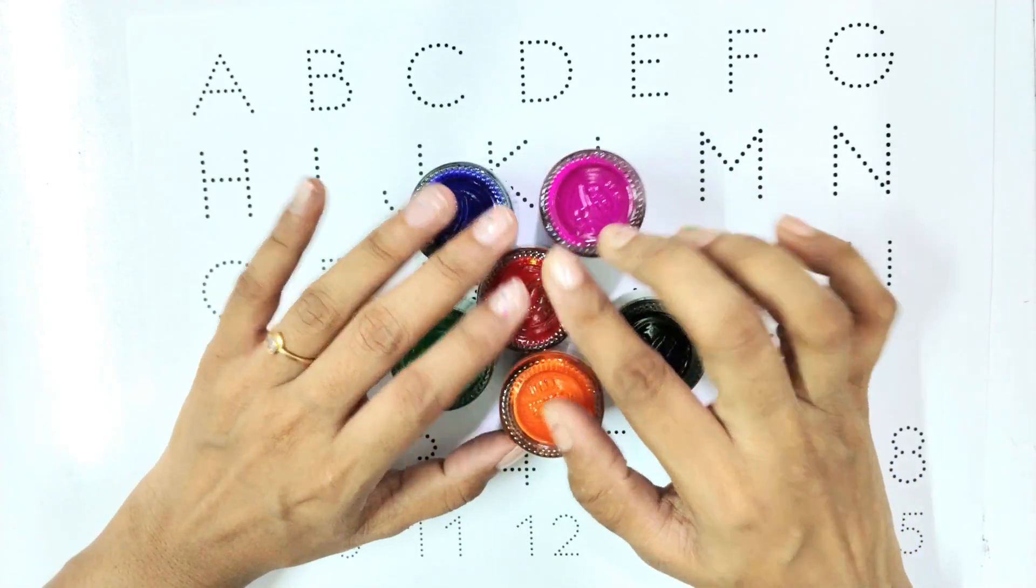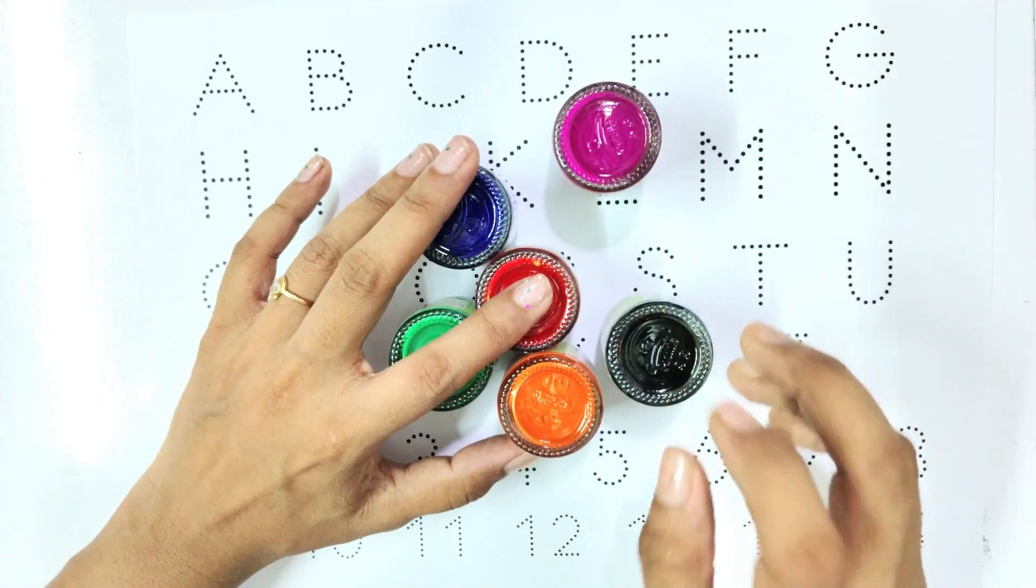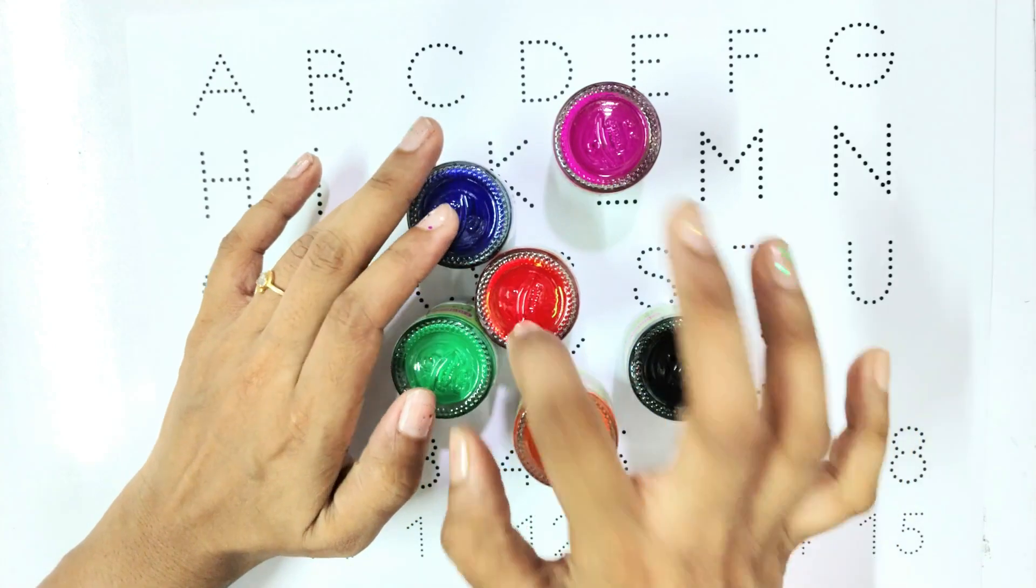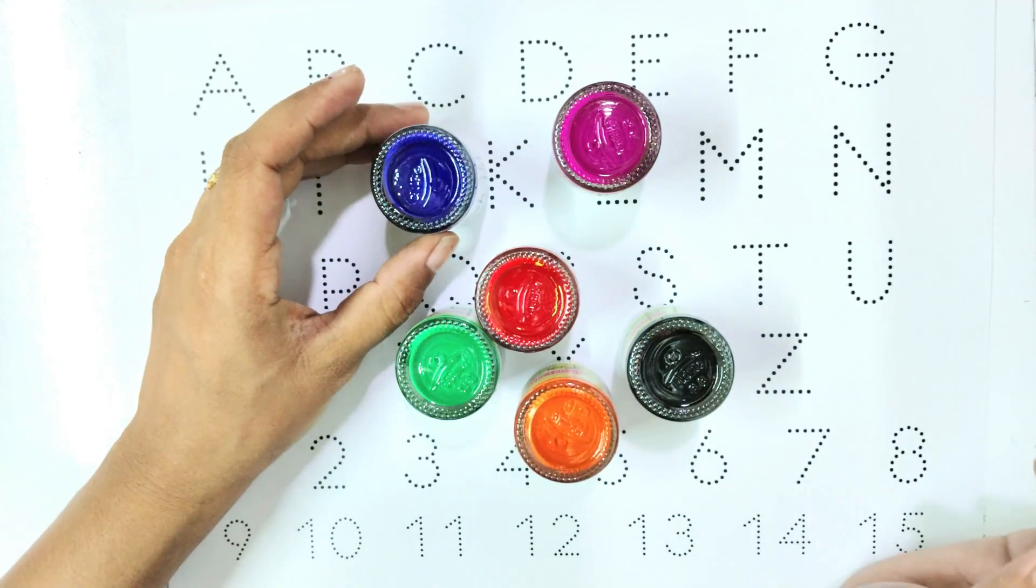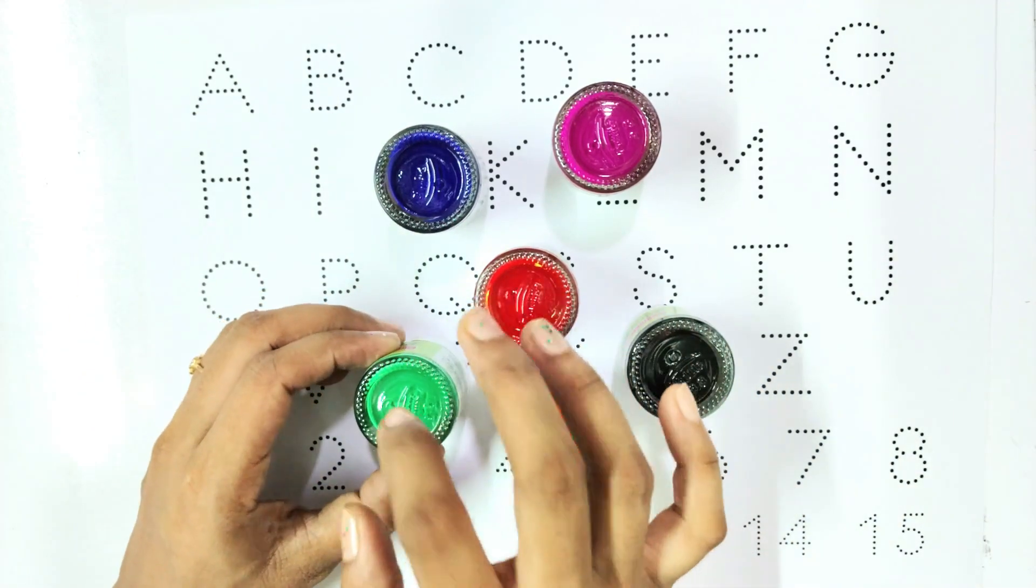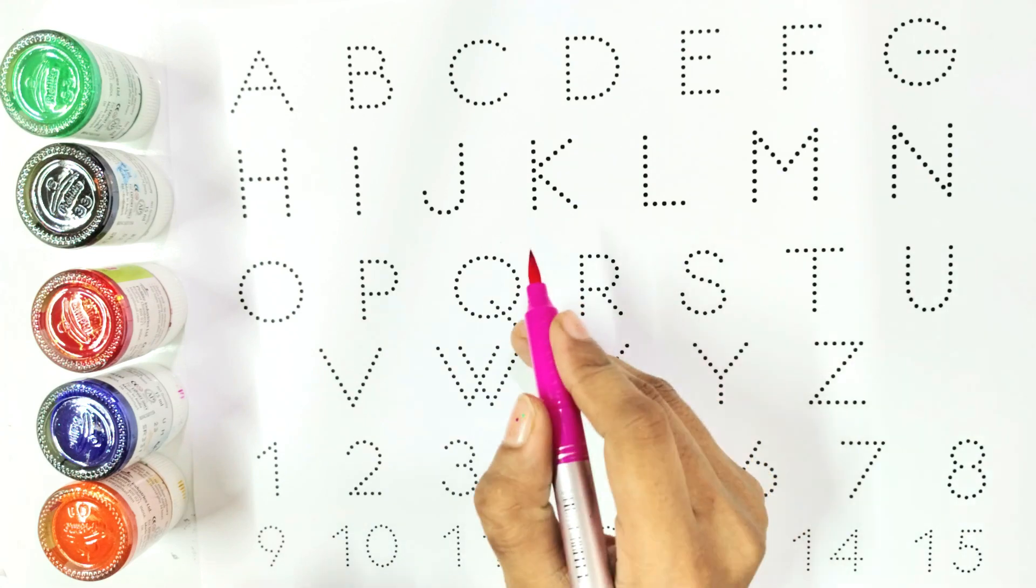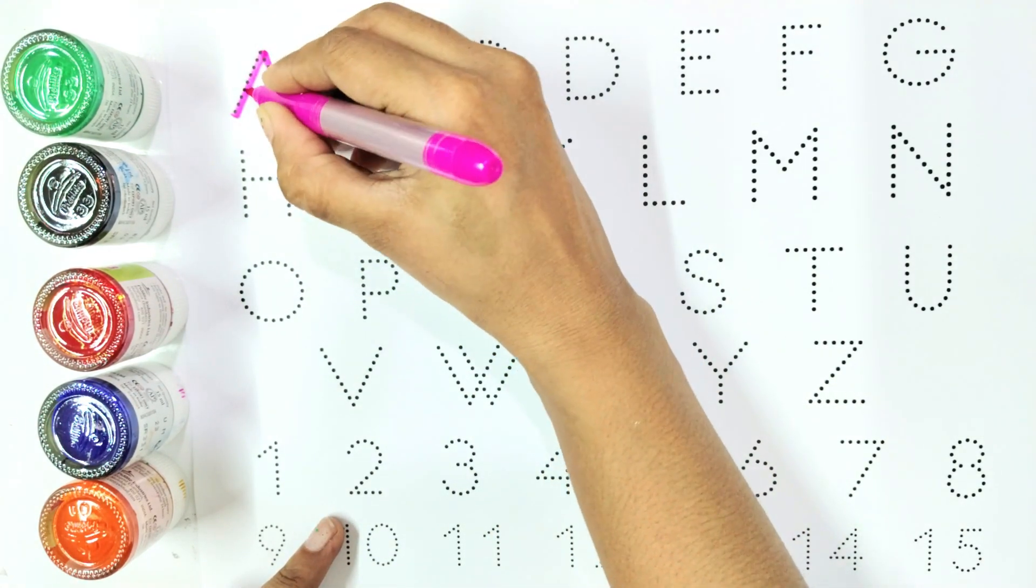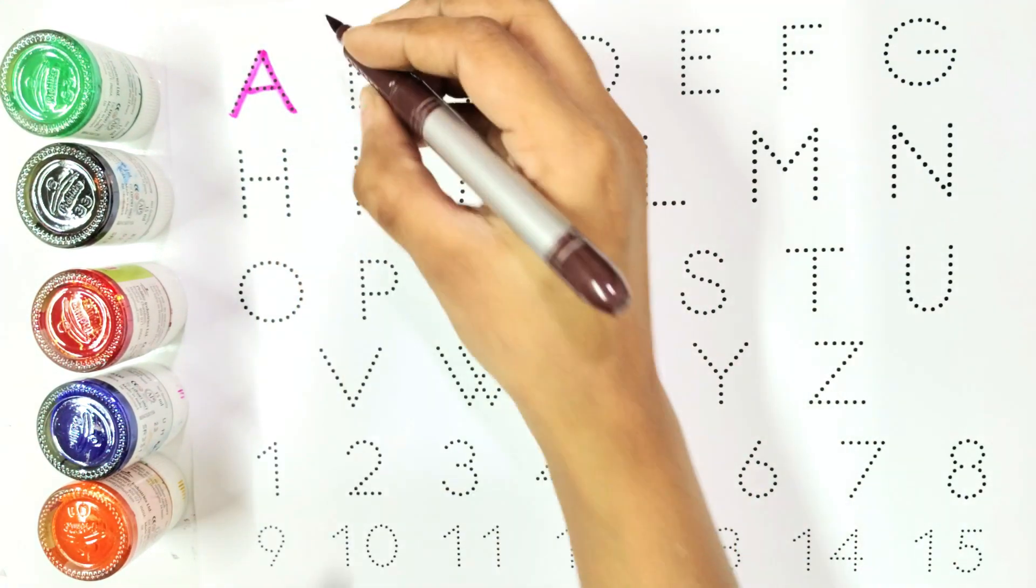Say with me color names: pink, black, orange, red, blue, green. Write with me. A is for apple. Write with